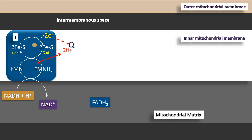All the components of the electron transport chain are proteins except coenzyme Q, which is derived from quinone and is a fat-soluble component. This coenzyme Q acquires two electrons and two protons from the iron-sulfur complexes — remember these electrons are coming from the reducing equivalent NADH plus H+ — and coenzyme Q is reduced to QH2, the reduced form of coenzyme Q.